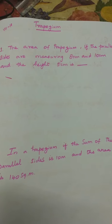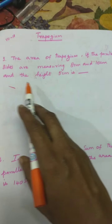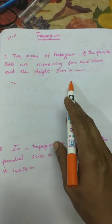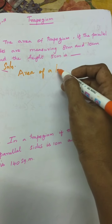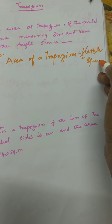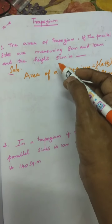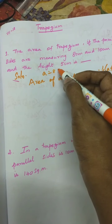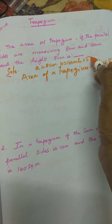You shall see some problems. The area of a trapezium, if the parallel sides are measuring 8 centimeter and 10 centimeter and the height is 5 centimeter, then you have to find the area. Solution: area of trapezium is equal to half into A plus B into H square units. Given: A is equal to 8 centimeter, B is equal to 10 centimeter and H is equal to 5 centimeter.